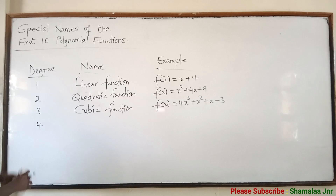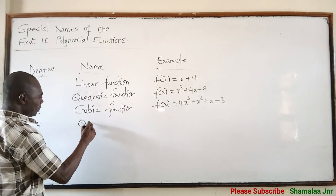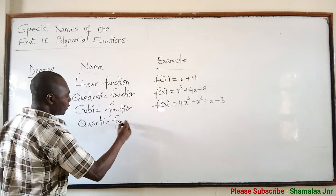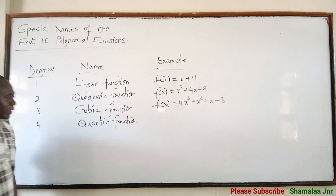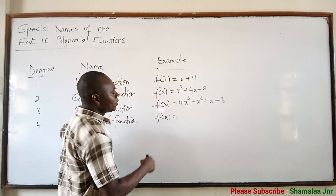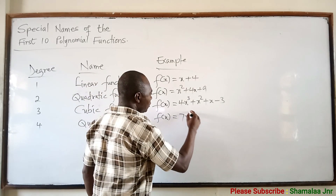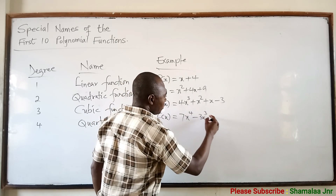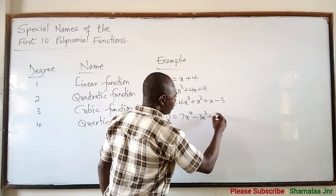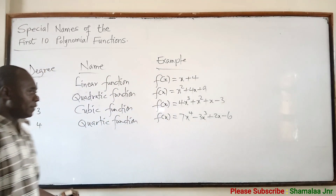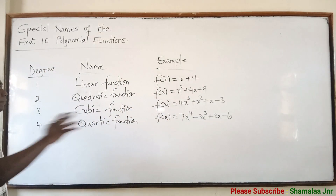Now when the degree is 4, then we say it is a quartic function. For example, L(x) = x⁴ − 3x³ + 2x − 6. This is a quartic function.